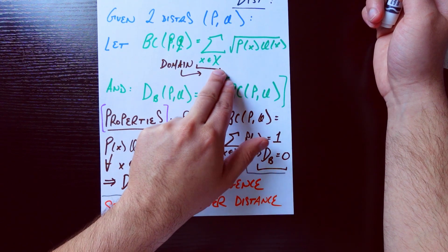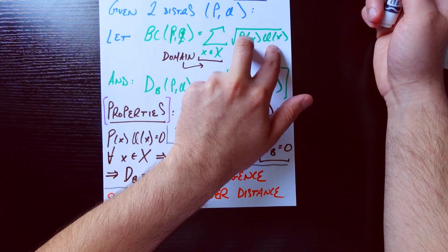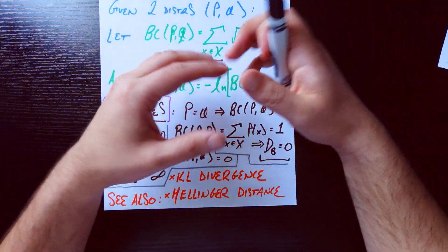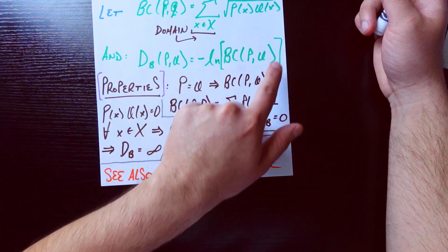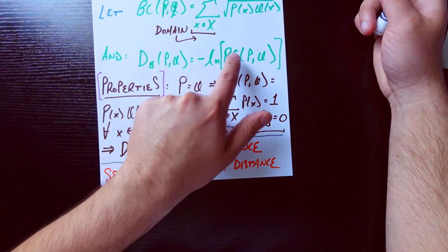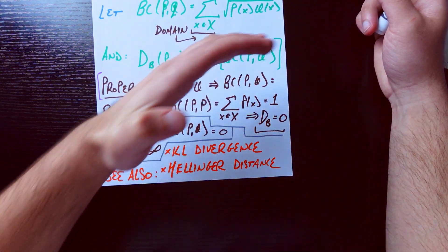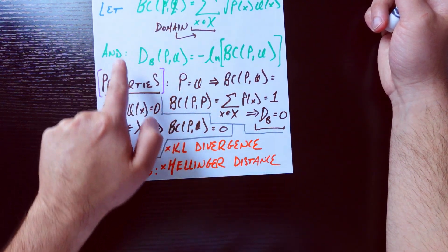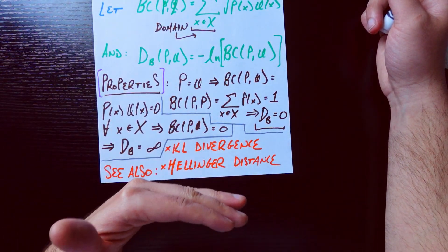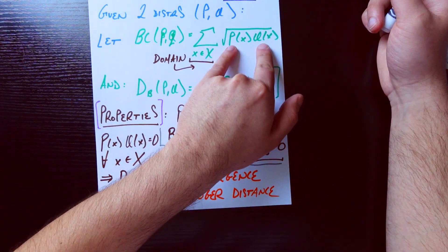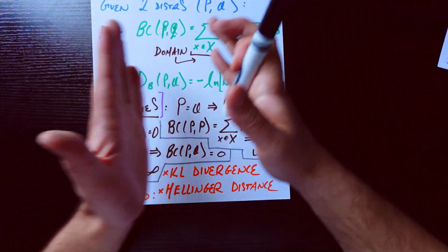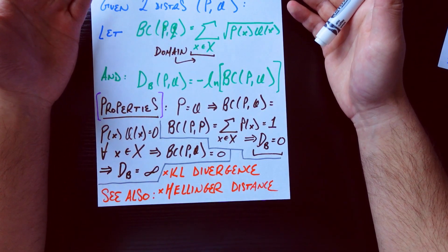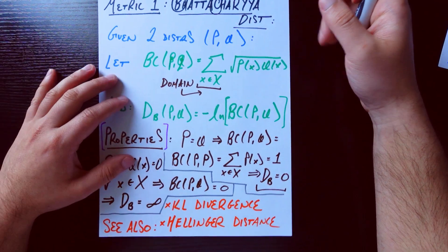To just kind of put a bow on this whole story: the closer these two numbers are for each point in this domain—so for each x in this domain, the closer P(x) and Q(x) are—that means that it's going to cause this BC to be bigger overall. If this BC is bigger overall, that means the natural log of this thing is going to be bigger because natural log is monotonically increasing. And putting a negative sign on it means that the distance is going to be smaller overall. So the closer these two things are, that means the distance gets smaller, just as we would expect from a difference metric or a distance metric between two distributions.